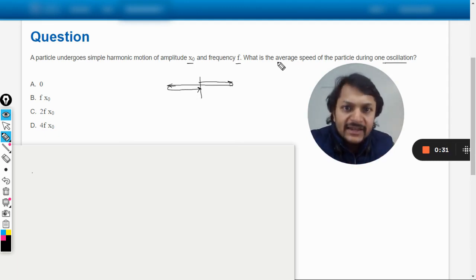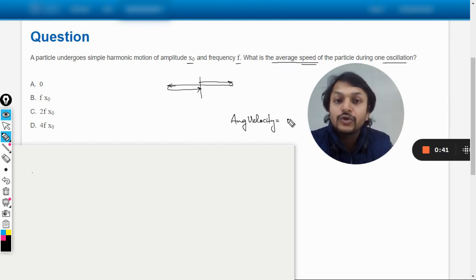We are supposed to find the average speed, not velocity. There could be a question where they ask you, what is the average velocity? Average velocity equals total displacement by total time. What is the total displacement? Obviously, the displacement comes out to be equal to zero because it started from the mean position and is coming back to the mean position. So what is the net displacement? Zero.